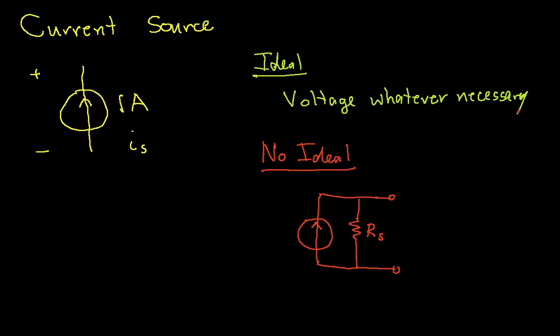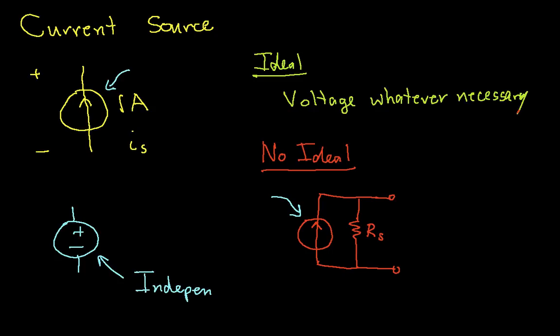One last topic: you'll notice I've been representing current sources with circles, and voltage sources with circles as well. The circle implies an independent source, meaning the voltage or current supplied is independent of any other voltage or current anywhere else in the circuit. This is often exactly what you want — when your source is providing power to a circuit, you want it to stay at the same voltage or current no matter what.